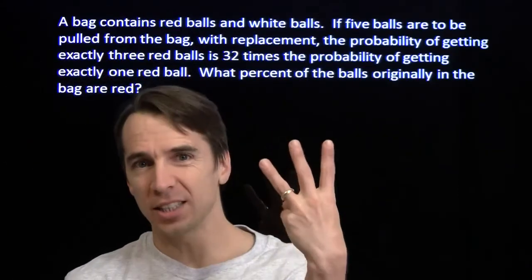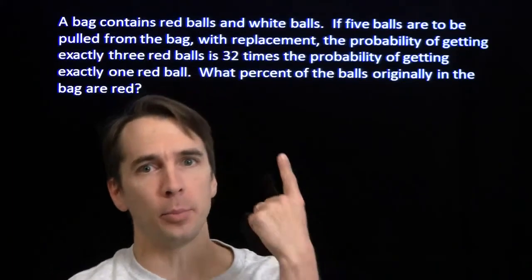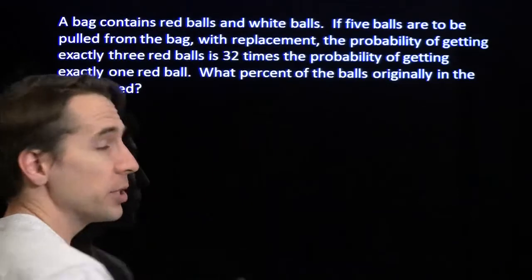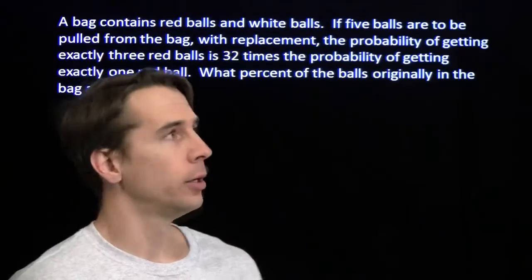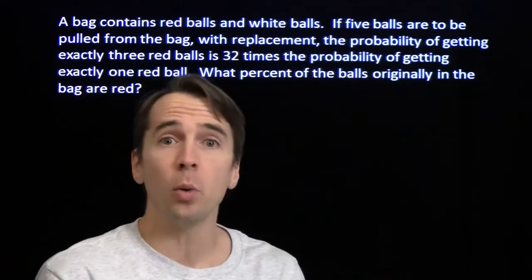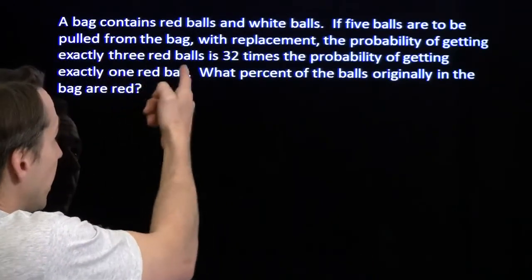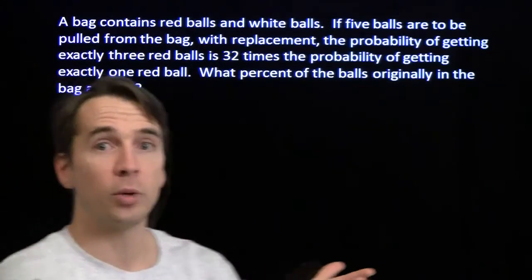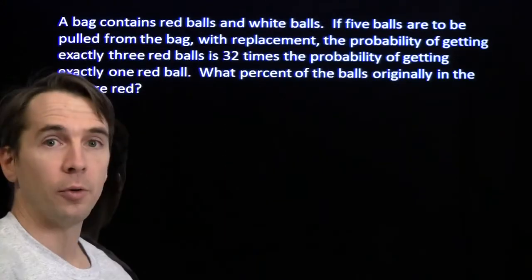The probability of getting exactly three red balls is 32 times the probability of getting exactly one red ball. We want to figure out what percent of the balls originally in the bag are red. We're basically given an equation, so we want to write expressions for each probability, set those equal to each other, and hopefully solve for what we're looking for.